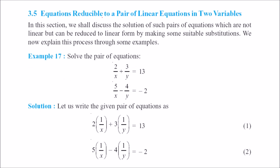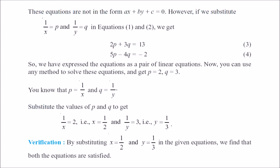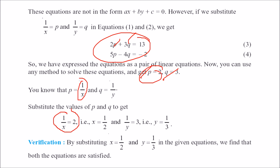Now consider equations that can be reduced to a pair of linear equations. For example, 2/x plus 3/y equals 13, and 5/x minus 4/y equals minus 2. Let 1/x equal p and 1/y equal q. Then the equations become 2p plus 3q equals 13 and 5p minus 4q equals minus 2. Solving these linear equations gives p equals 2 and q equals 3. Since p equals 1/x, x equals 1/2; since q equals 1/y, y equals 1/3.